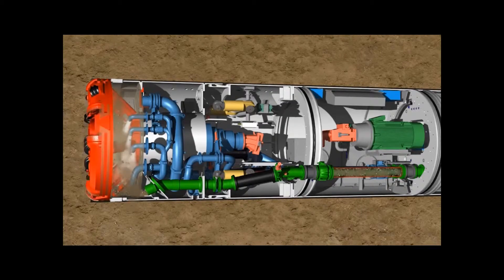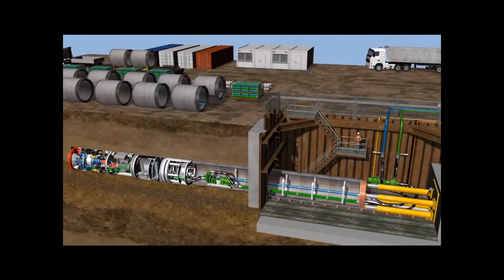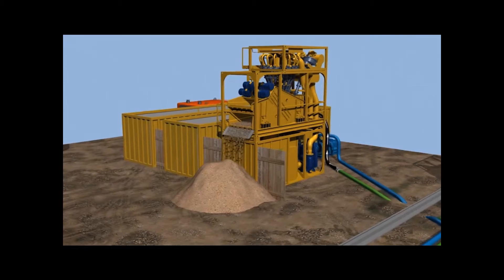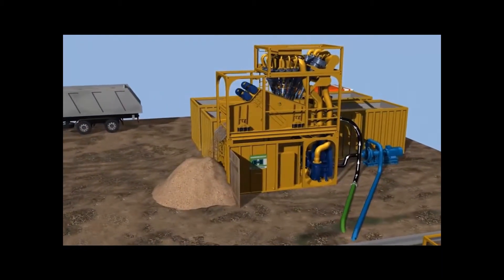Together with the support fluid, the excavated soil is suctioned by the pump and pumped through the slurry line to the launch shaft. Another pump transports the material to the surface to the separation plant. There a multi-stage separation process separates and removes the excavated material from the support fluid and the clean suspension is fed back to the machine again.